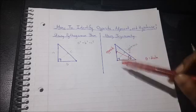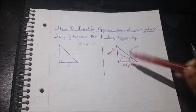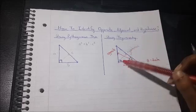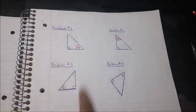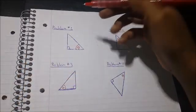And that's pretty much it when we're identifying opposite and adjacent sides, and clearly the hypotenuse is always opposite of the right angle. So let's look at a few problems on how to identify opposite, adjacent, and hypotenuse sides.